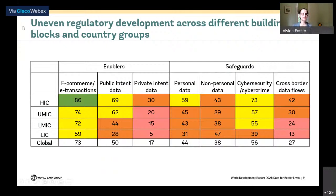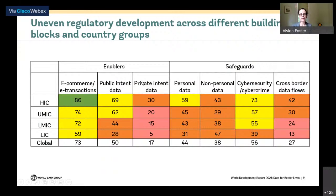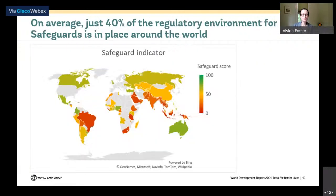Presenting average scores by income group across the seven different modules, the most advanced areas across income groups are e-commerce enablers as well as cyber security safeguards. There is a systematic difference across income groups, and even the high income group has quite major areas of underdevelopment in the regulatory framework. Certain areas such as private intent data enabling, cross-border data flow enablers, and safeguarding non-personal data systematically lag behind across all income groups in terms of sophistication of the data regulation environment.